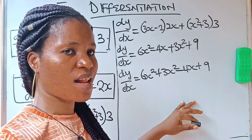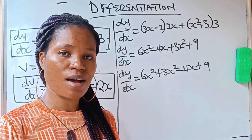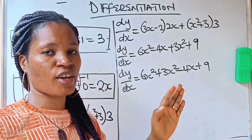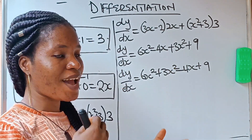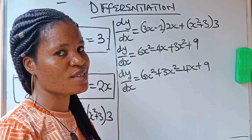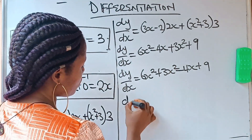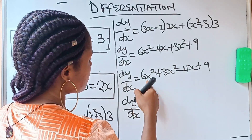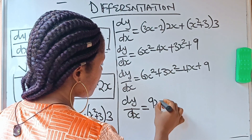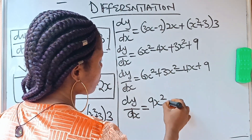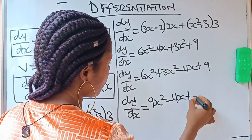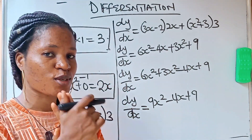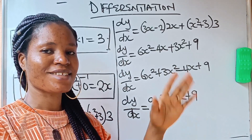If you have followed me to this level, it means you really enjoyed what I'm doing. Please click on the subscription button and also on the notification bell so that you'll be notified anytime I upload a new video. So dy/dx equals 9x squared minus 4x plus 9. That is your final answer using product rule. Do have a lovely day — bye!